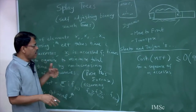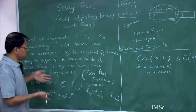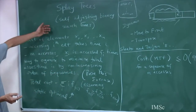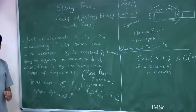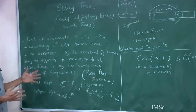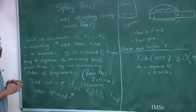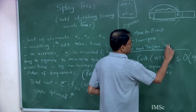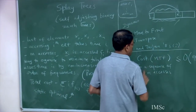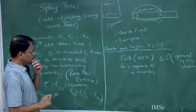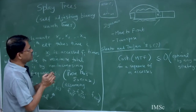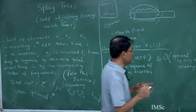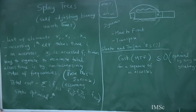This is an impressive result — I do not need to know the frequencies in advance. Somehow in a self-adjusting way I do my adjustment in the linked list so that my overall cost is within the cost of any other strategy. Now let us translate all of this into the binary search tree situation, where you do not have a linked list but a search tree.